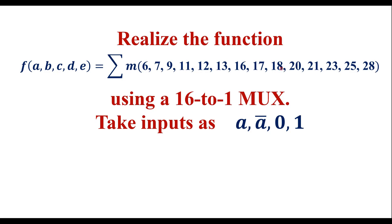So here a five-variable function is given. Using a 16-to-1 MUX, take inputs as a, a bar, 0, and 1. It means that here it is a five-variable function — that is a, b, c, d, e — and we should consider inputs as a, a bar, 0, or 1. It means a 16-to-1 MUX.